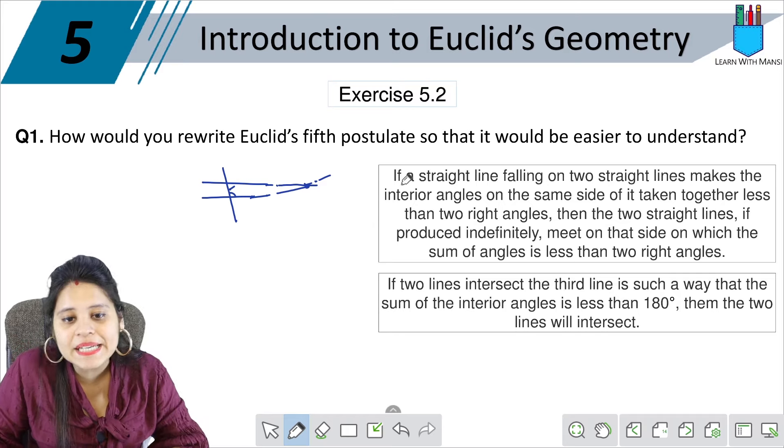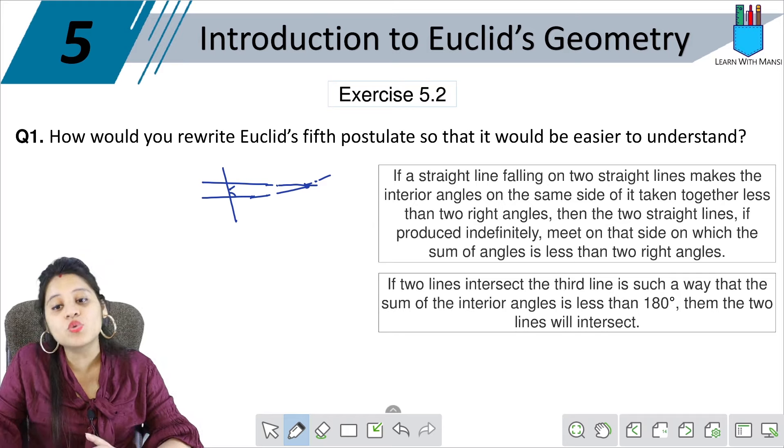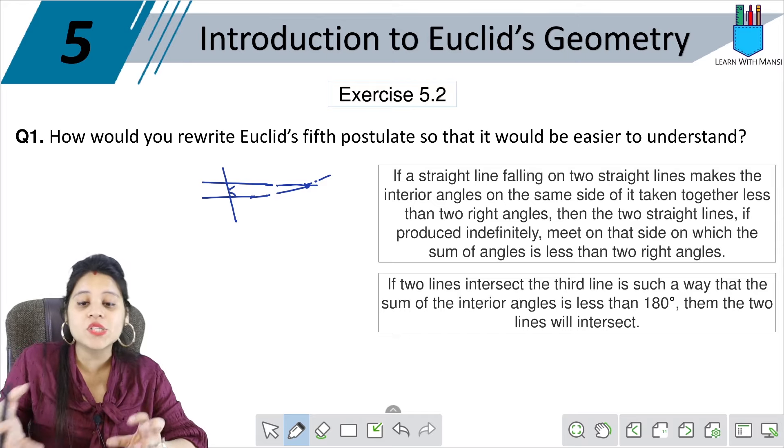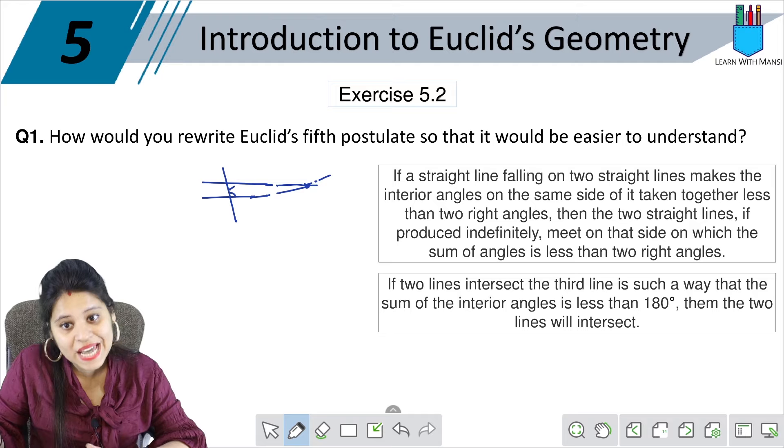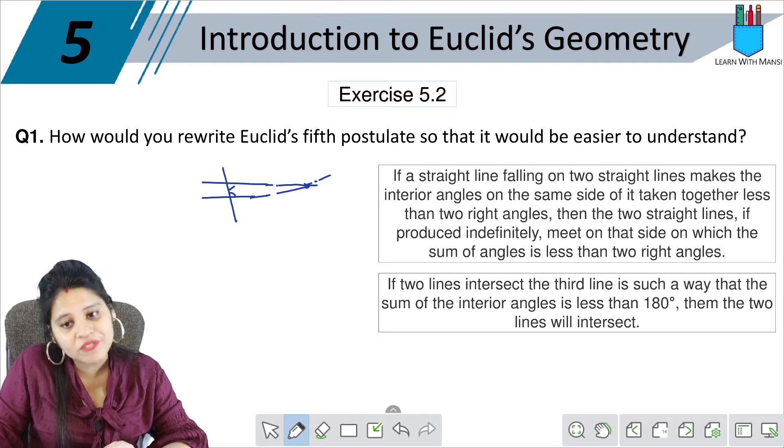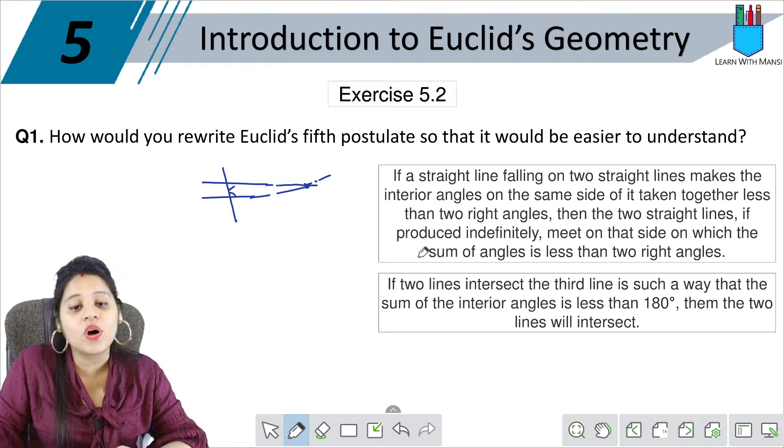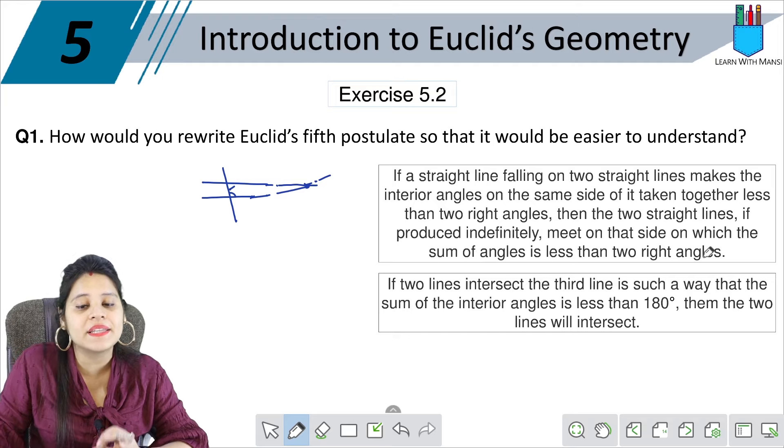Now, how would you write here? If a straight line falling on two straight lines makes the interior angles on the same side of it, taken together less than two right angles, then the two straight lines, if produced indefinitely, meet on the same side on which the sum of angles is less than the two right angles. Now, I can see this in simple words.